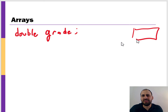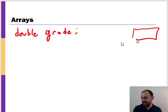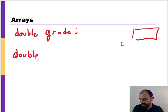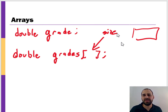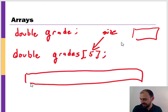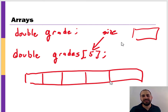However, what happens if we have a collection of grades — things that belong together, like grades in a class? In that case we have an array, and we can declare it in a similar way, except we provide a size — how many grades we're going to store. For example, if the size is five, we're allocating space not just for one grade but for five grades in memory.